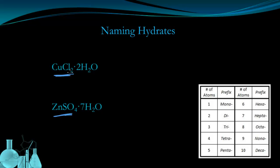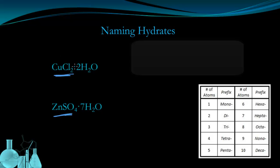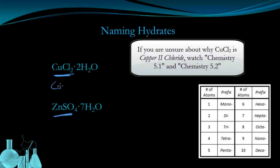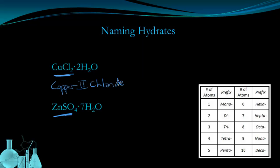So to name CuCl2, we know that this is copper 2 and this is chloride. So this is going to be copper 2 chloride for the ionic portion of this hydrated salt. And then we have to account for this 2H2O. And you'll notice that the 2H2O has a little dot in front of it. This dot is not like the dot in math.